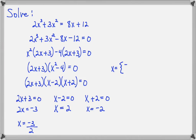So our three solutions are negative 3 over 2, and positive 2, and negative 2.